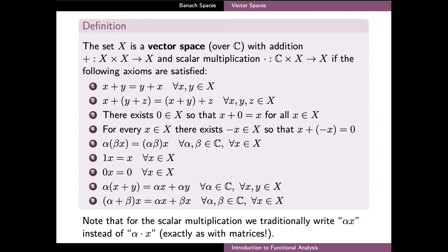More generally, a vector space is an algebraic structure which is defined axiomatically. The structure consists of a set X, a field of scalars — in our case, typically the field of complex numbers C — and two different operations defined on elements of X.